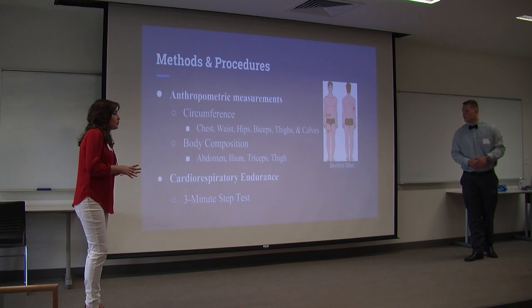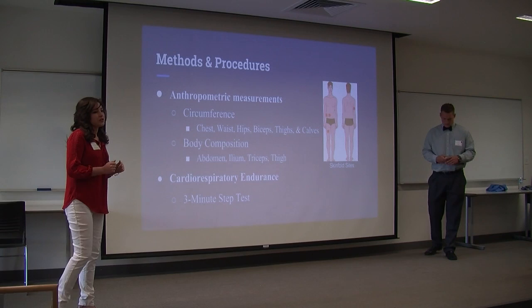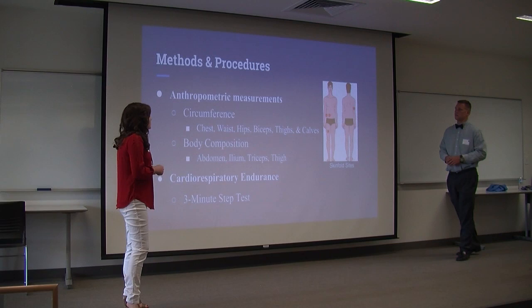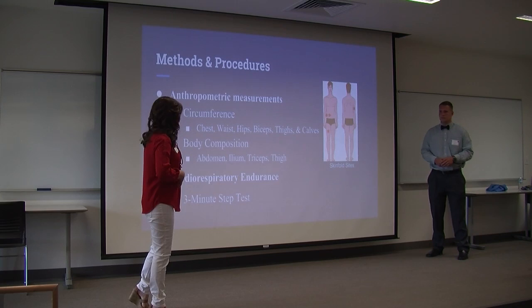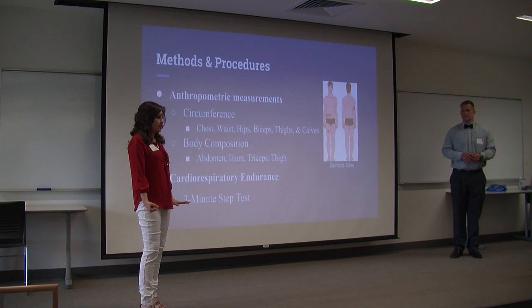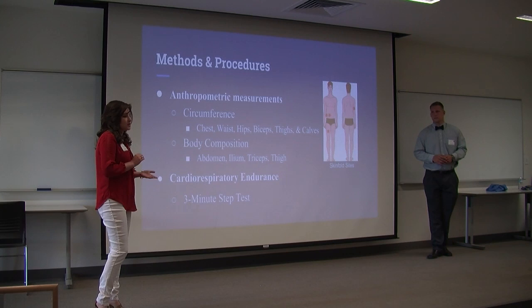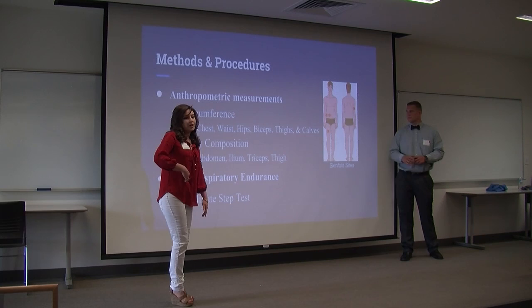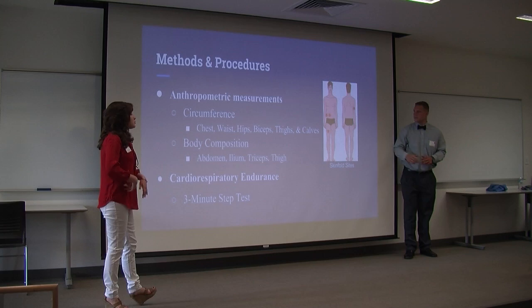We moved on to anthropometric measurements. We took circumferences on both sides of the body using a tape measure — around their chest, their waist at the narrowest part, around their hips at the widest part, around their thighs, and around their calves. During these tests the athlete was relaxed, not flexed. Second, we did body composition — skinfold measurements at four sites: the abdomen, the ilium above the hip, the triceps on the back of the arm, and the middle of the thigh.